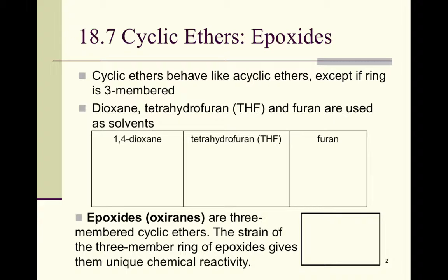Let's take a look at dioxane. 'Di' meaning two, and the 'ox' piece is telling us we're going to have two oxygens. So the structure of a 1,4-dioxane would be a six-membered ring, two of which are oxygens.